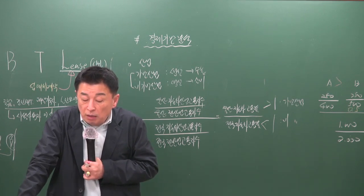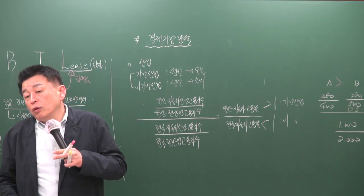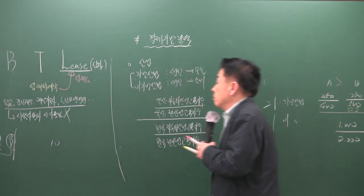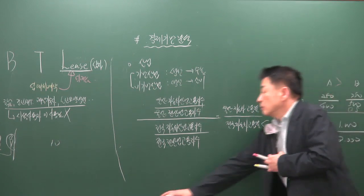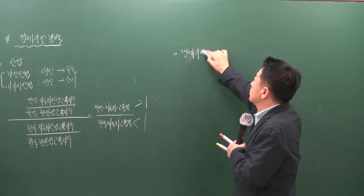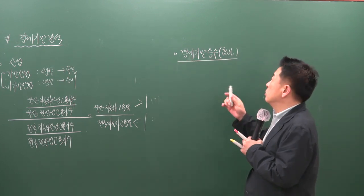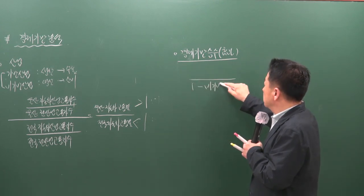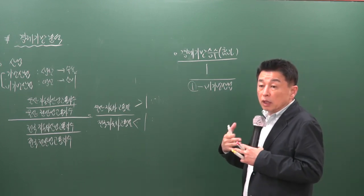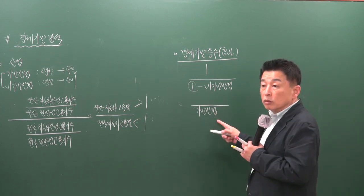경제기반 승수(Economic Base Multiplier)는 기반 산업의 고용·소득 변화가 도시 전체에 미치는 파급 효과를 측정합니다. 공식은 1 ÷ (1 - 비기반 산업 비율) = 기반 산업 비율의 역수입니다. 전체에서 비기반 산업 비율을 빼면 기반 산업 비율이 남습니다.